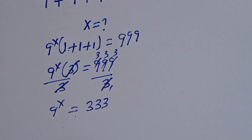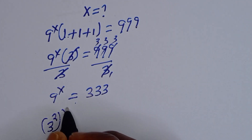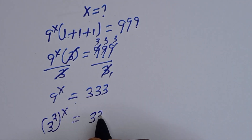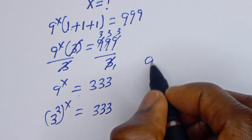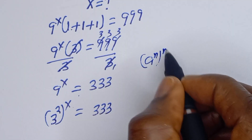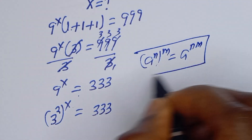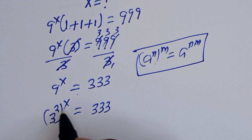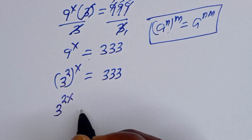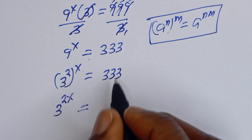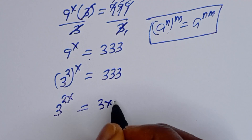Now 9 to the power of S equals 333. This can be written as 3 squared to the power of S is equal to 333. Using the power rule — a raised to power n, to the power of m equals a raised to power nm — this becomes 3 to the power of 2S is equal to 333.